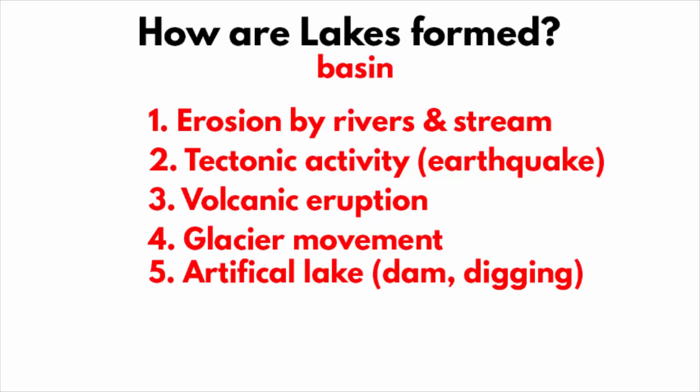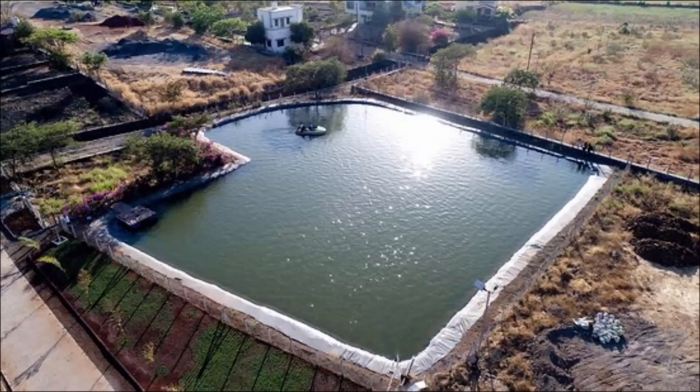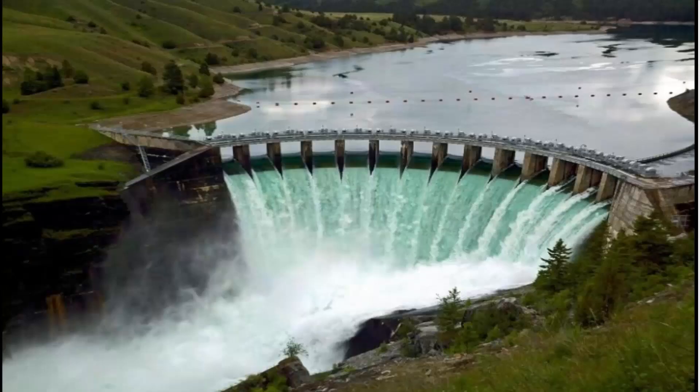There is also something called artificial lakes. Lakes are made by digging land or by building a dam on a river. These artificial lakes are also called reservoirs, where water is stored for irrigation, drinking, and industrial use.